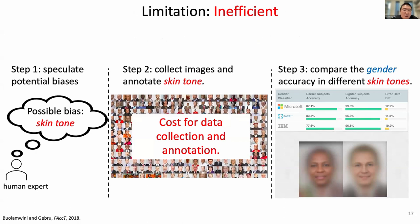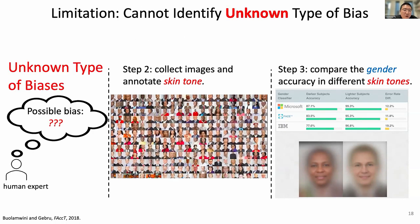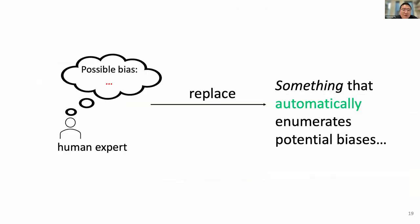This pipeline is very inefficient and costly. In the second step, you need to spend time and money collecting data and annotations. More importantly, if there are unknown types of biases — biases that are not known to human experts and are omitted in the first step — there is no chance you can recover them in the later pipeline. Our idea is: what if we can replace human experts with something that automatically enumerates potential biases?